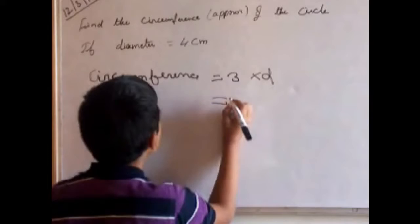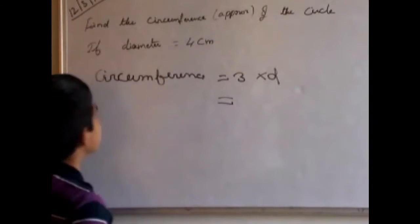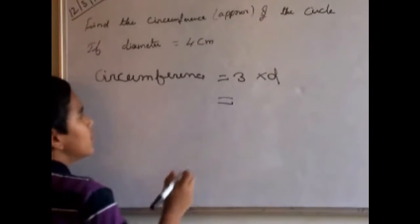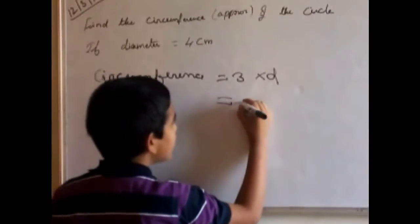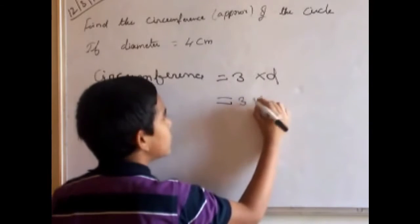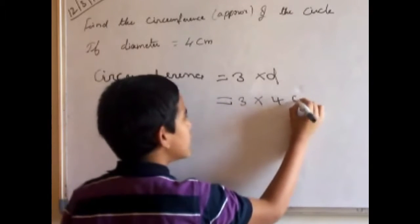Now we should put D is equal to 4 cm. They gave diameter. So the formula is 3 into D. So we should multiply 3 into 4 cm.